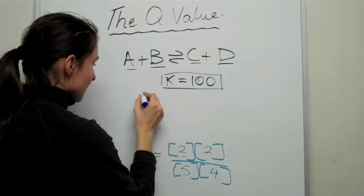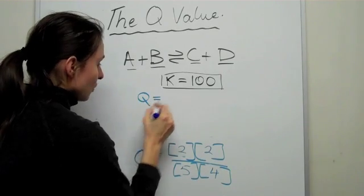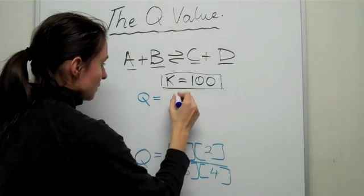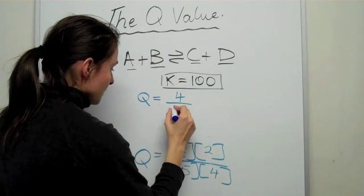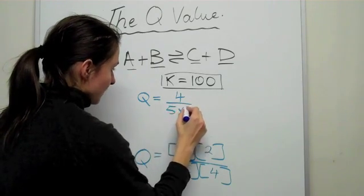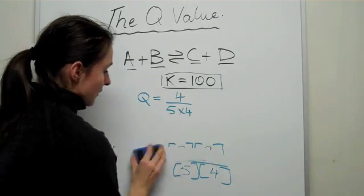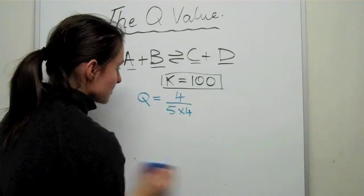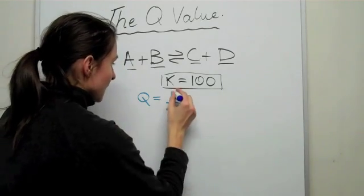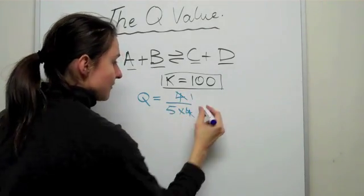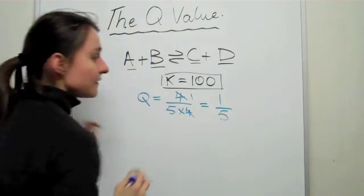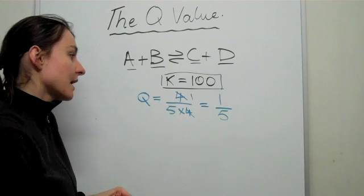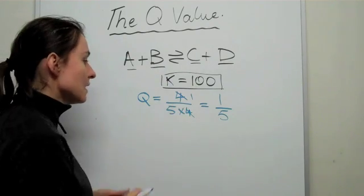But the Q value, if you plug in all that data that was there before, you'll get 4 on the top and you'll get 20 at the bottom or 5 times 4 at the bottom. And as you can see, the force can cancel, it can cancel out and you'll just get 1 over 5. So the Q value is 1 over 5, and it doesn't have any units because it's just the same as the K value units.